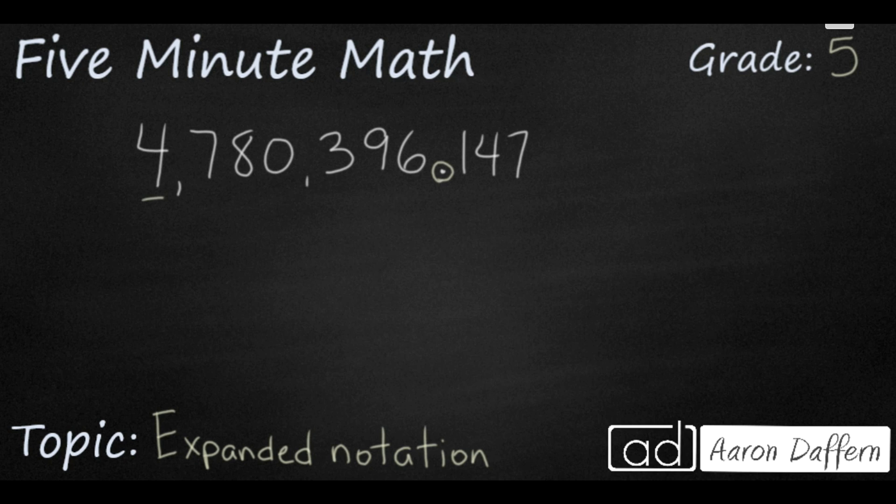Start with your largest place value. We have a 4 and it's in the millions place. So, you're going to multiply the digit 4 times its place value, 4 times 1 million. And even if you're not sure what the name of that place value is, you can write it correctly by simply looking at how many digits are after the one you're looking at until you get to the decimal point. So, I have a 4 and then I've got